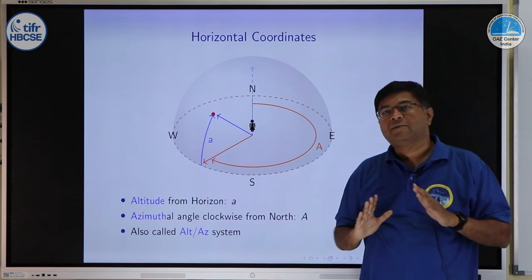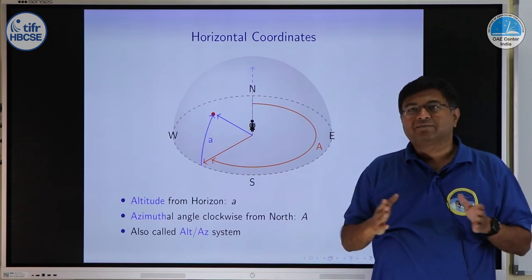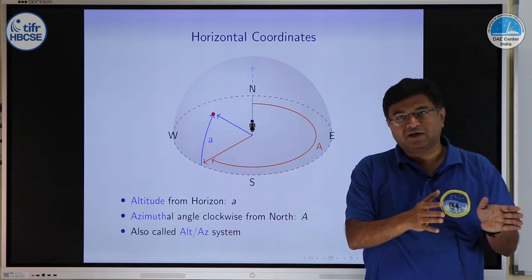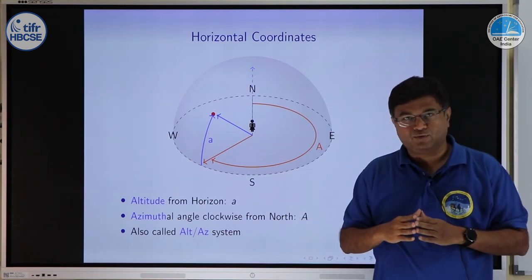This system is either called horizontal coordinate system or sometimes people also call it as alt-azimuth system standing for altitude azimuth together, alt-azimuth.